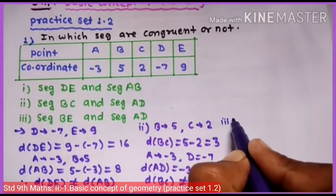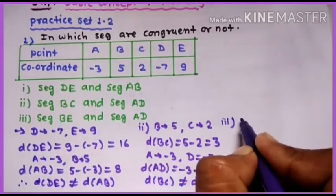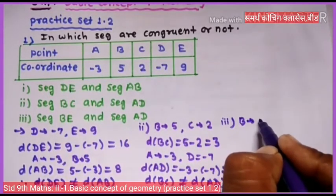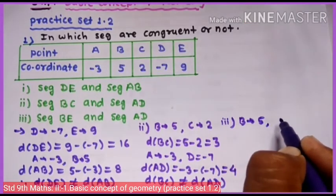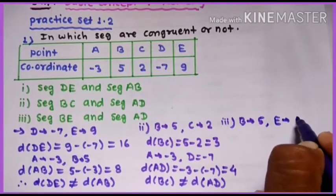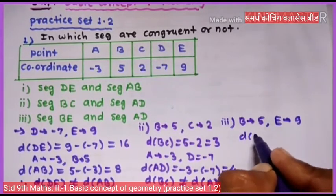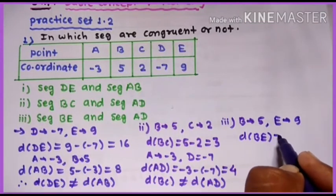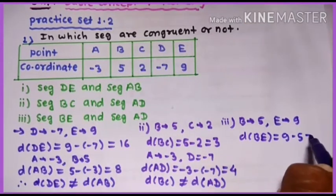Third part: segment BE and segment AD congruent आहेत किंवा नाहीत. B चा coordinate 5 आणि E चा coordinate 9 आहे. Distance BE = 9 minus 5 = 4.